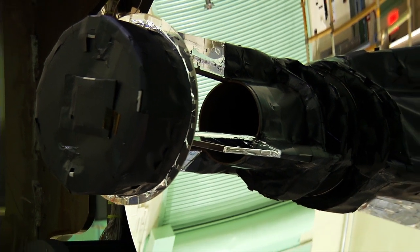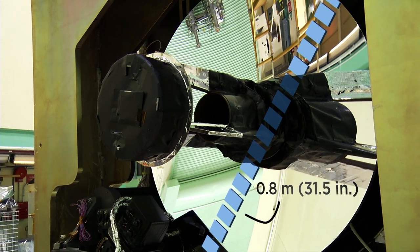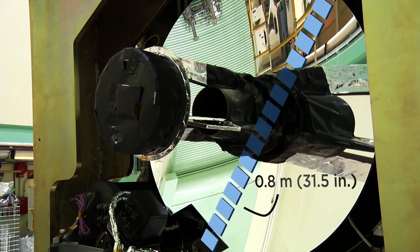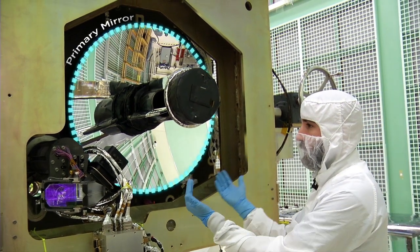The telescope is 0.8 meters in diameter, which is about 31.5 inches in diameter for the primary dish. The primary dish is the reflective surface that you see, which has curvature to it.